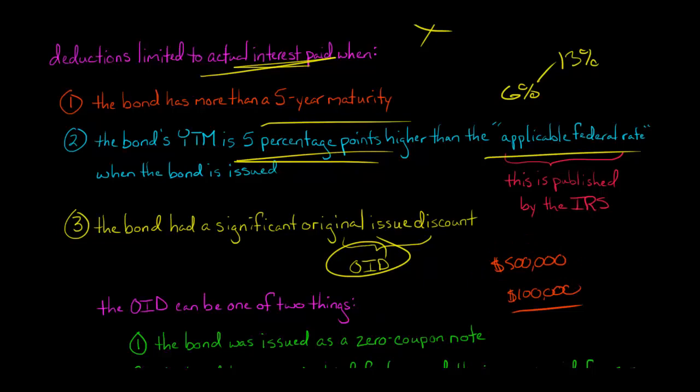So there's implicit interest, which is, hey, the issuer is saying, look, I'll take $100,000 and I'll repay you $500,000. So that $400,000, that difference there is basically implicit interest. But it's not like there's interest payments being made every six months or every quarter or anything like that.